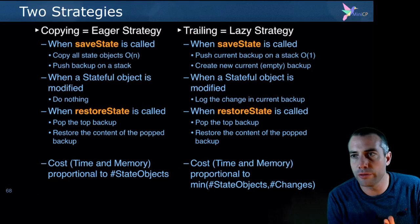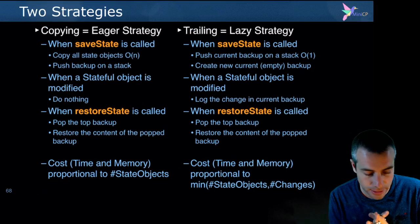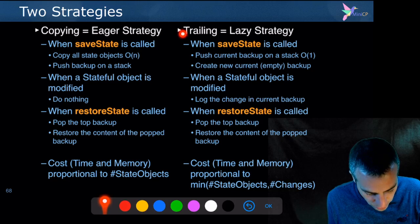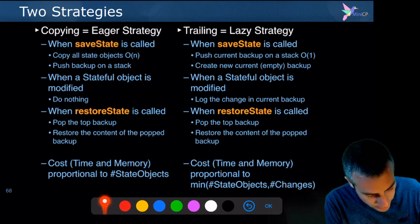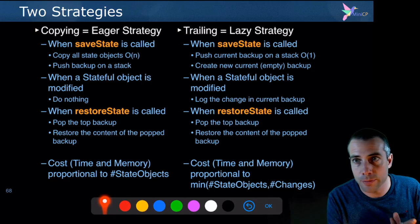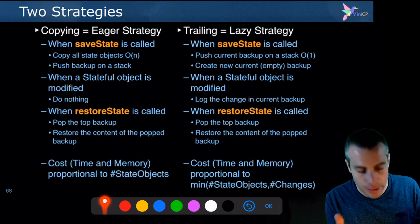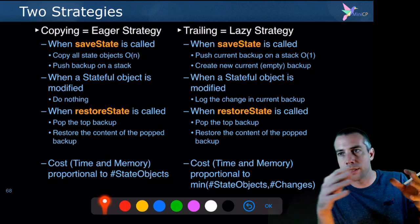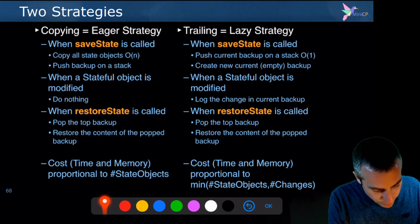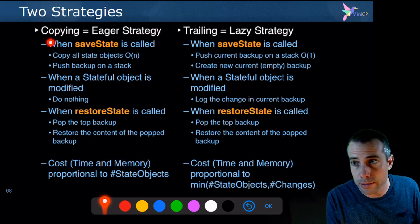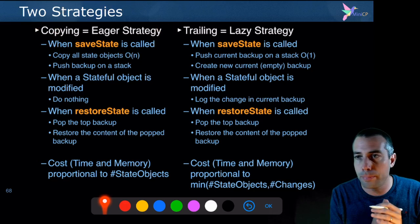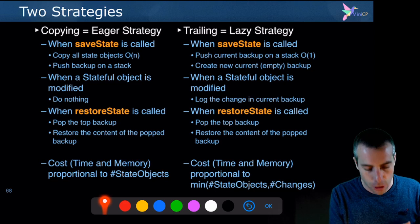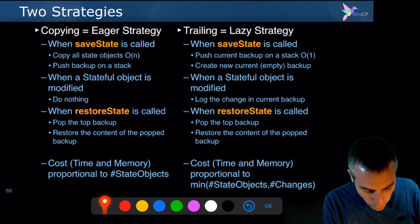In terms of state management, we have two different strategies, both implemented inside different commercial solvers and open source solvers. We have the copying strategy and the trailing strategy. The copying strategy, whenever you want to save the state, will take all the objects created inside the state management, store the state of each of them, and push this as a new backup inside the stack. When you restore the state, you just pop the backup and restore all the objects one by one. This is a kind of brute force approach because you scan everything. The advantage is that it's easier to do parallel computation because you have a complete clone of everything. The trailing strategy is more fine-grained.